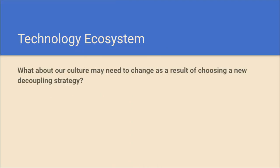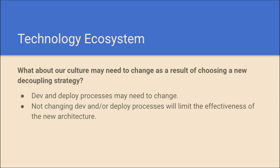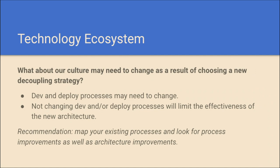Ask yourself: what about our culture may need to change as a result of choosing this decoupling strategy? The first thing to look at is your dev and deployment processes, because they're very different between tightly coupled and decoupled architectures. Just the fact that you now have a build pipeline is probably a substantial change from a bare-bones Drupal site. If you don't change those processes or at least look at them, you risk limiting the effectiveness of what you're doing. Map your existing processes, look for areas of improvement — both in processes and architecture.